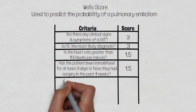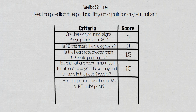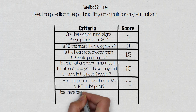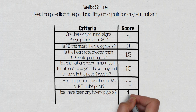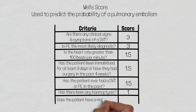Has the patient ever had a deep vein thrombosis or pulmonary embolism in the past? A yes scores 1.5. Has the patient had any haemoptysis, which is the coughing up of blood? This is another sign of a pulmonary embolism and a yes scores 1. Does the patient have any malignancy, which is a risk factor for coagulopathy? A yes scores 1.